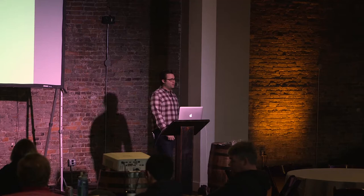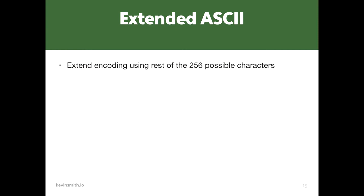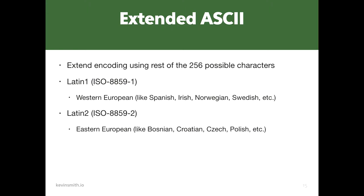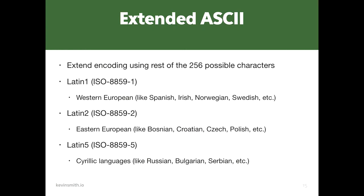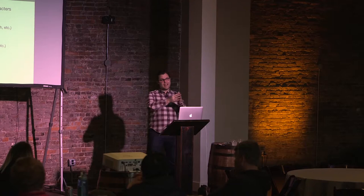That's where we get the extended ASCII character sets — extended just meaning those first 128 characters are the same as ASCII, but these other character sets extend and use the remaining 128 characters for other characters. Latin-1 is probably the one you're familiar with — developed for Western European languages like Spanish, Irish, Norwegian, Swedish. Latin-2 was developed for Eastern European languages like Bosnian, Croatian, Czech, Polish. Latin-5 for Cyrillic languages like Russian, Bulgarian, Serbian. These are all backwards compatible with ASCII.